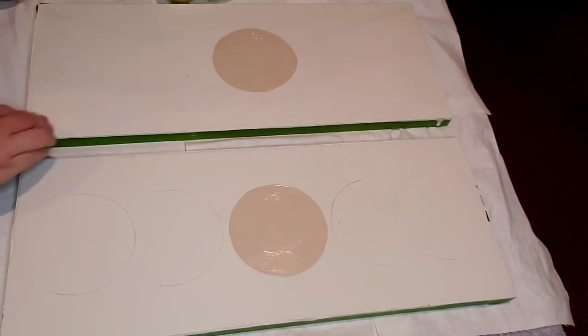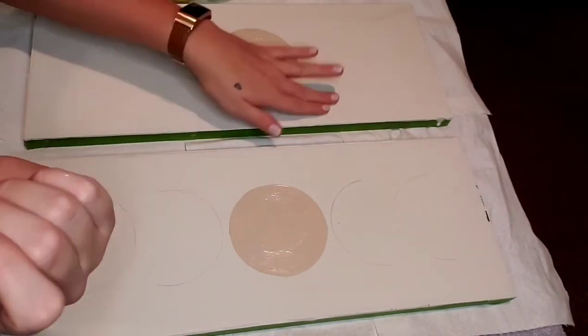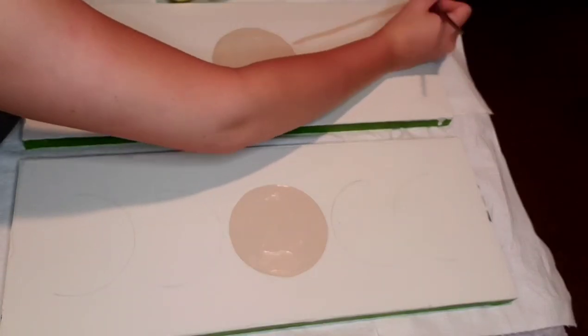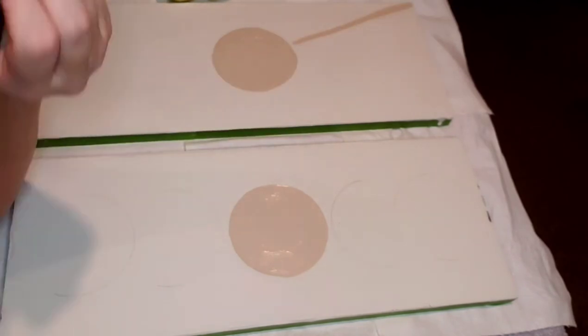You can see me go back in and erase the guidelines down to where I can just barely see them. That makes it easier to paint over so you can't see the pencil through.